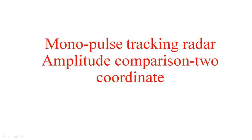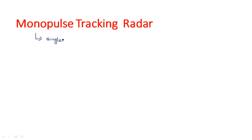In this video I'm going to explain about monopulse tracking radar in amplitude comparison with a two coordinate system. Monopulse means we are using a single pulse for the entire operation. We are tracking an object or target using that single pulse.